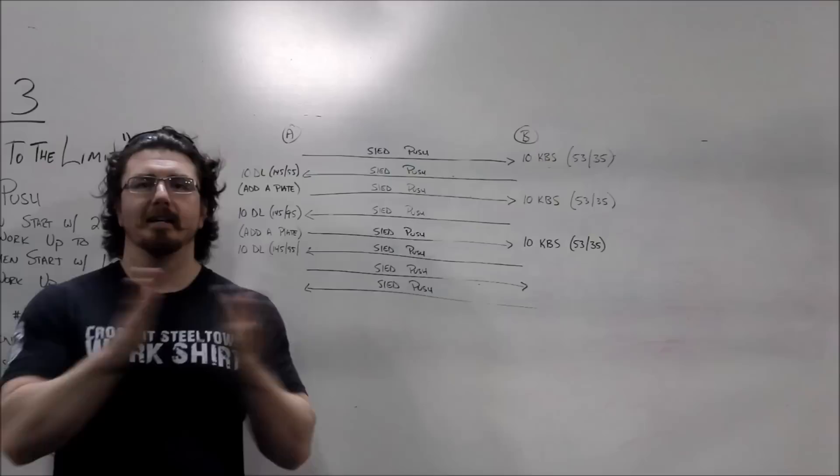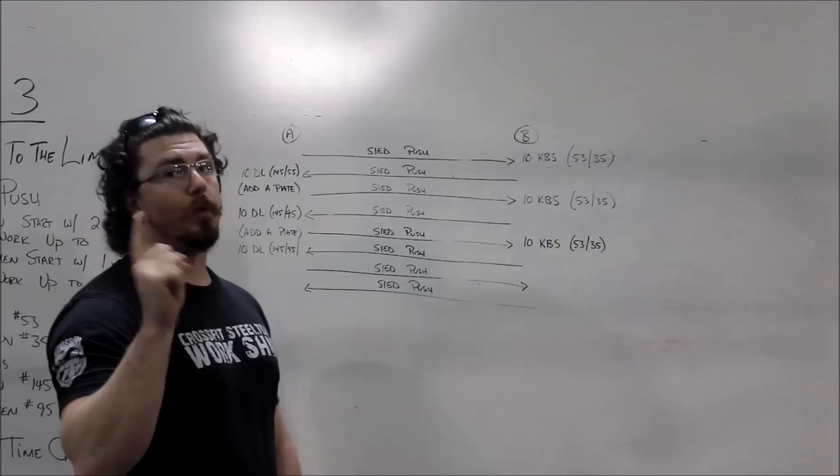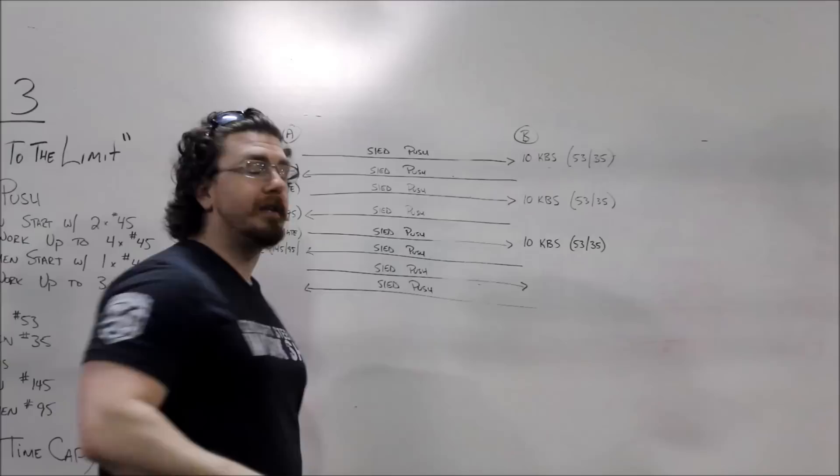All right kids, WAD number three, a little diagram on the board. We're going to go over it so we can answer all your questions. You're going to start at point A. Guys are going to have two 45-pound plates on their sled. Ladies, you're going to have one 45-pound plate on your sled. You're going to push the sled down, cross the line. Once you cross the line, your judge says it's good, you're going to grab a kettlebell and do 10 kettlebell swings.